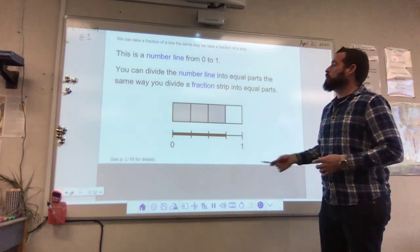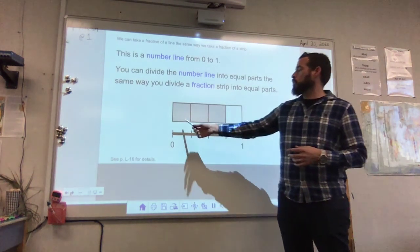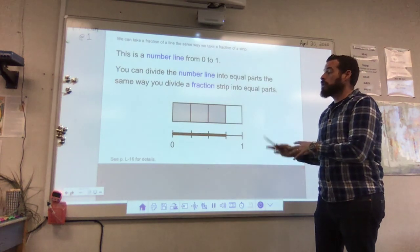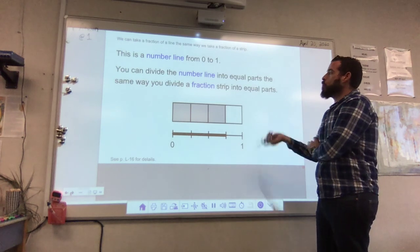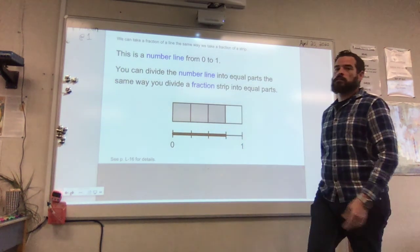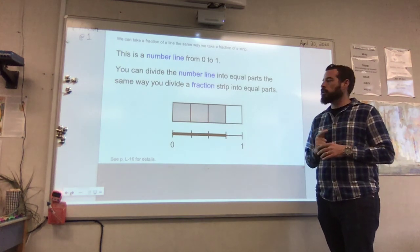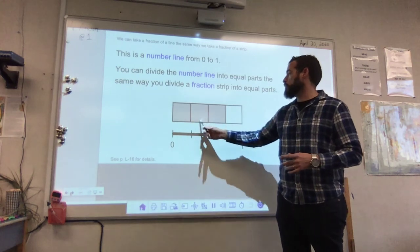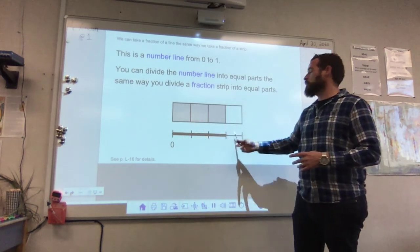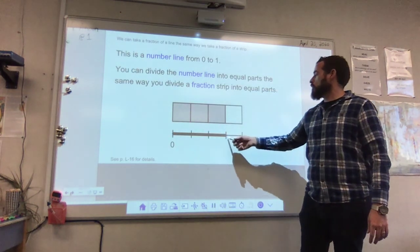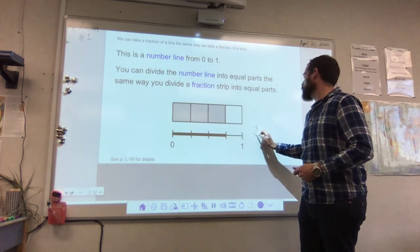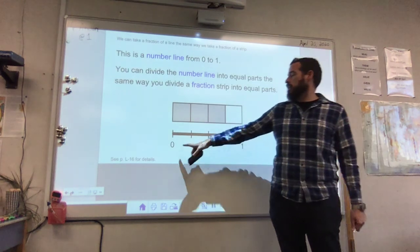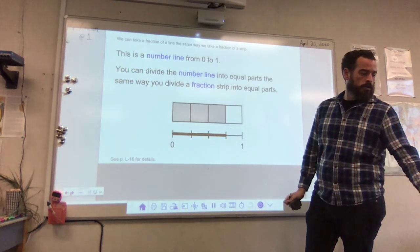This number line goes from 0 to 1 and is divided into four sections, just like this fraction strip. Take a look and see if you can figure out what fraction this would represent. Hopefully you're thinking: this is divided into fourths because there are 1, 2, 3, 4 sections in the strip and 1, 2, 3, 4 sections in the number line. It goes from 0 up to where 3 would be, so it's 3 fourths. Both the strip and the number line represent 3 fourths. Remember, anytime you're showing a fraction on a number line, it goes from 0 to 1.